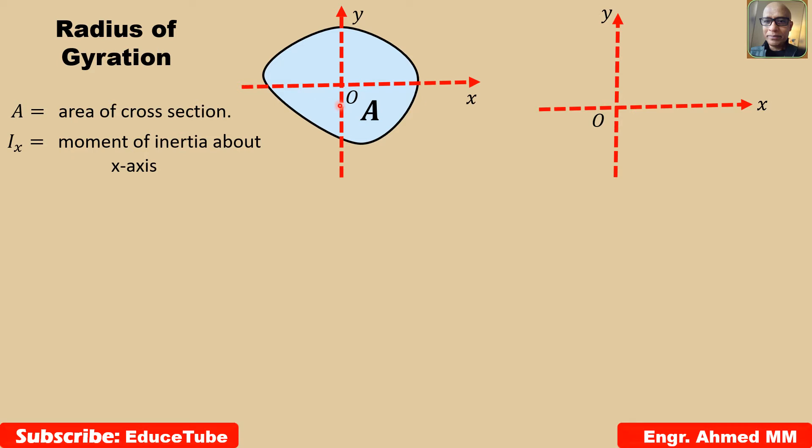Here, I am considering an area A which has a moment of inertia Ix with respect to x-axis. If I imagine that the area is concentrated into a thin strip, say like this one, this area is concentrated as this thin strip which is parallel to the x-axis.